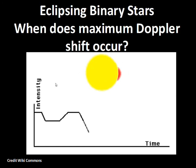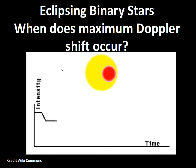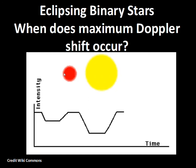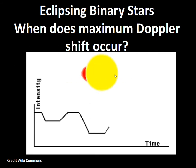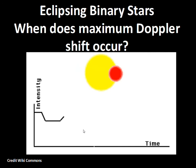A quick question: when do we have maximum Doppler shift for the red star? You should be saying either the left side or the right side — that's going to be the time when the star in its orbit is moving towards us or away from us. When it's right in front of the yellow star, the red star's velocity is sideways, so we won't see a Doppler shift. But we do see a dimming of the light — an eclipse of the light.